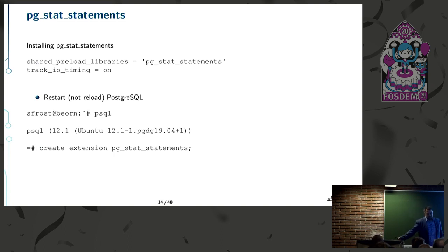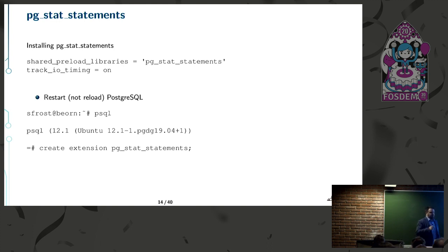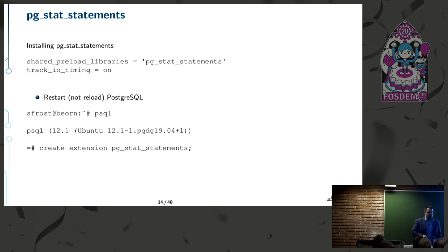The other way to look at slow queries is using pg_stat_statements. It's an extension you add to Postgres that lets you look at all queries in a normalized fashion — similar to PG Badger but through a view inside Postgres. Installing it requires updating shared_preload_libraries to include pg_stat_statements, then running CREATE EXTENSION in each database you want access to the view. Note that you'll need a restart, not just a reload.